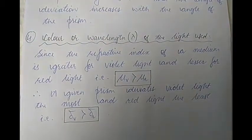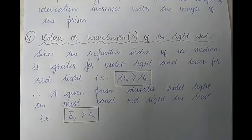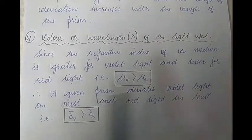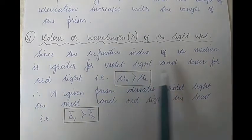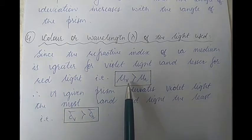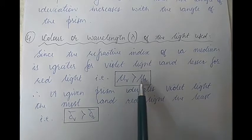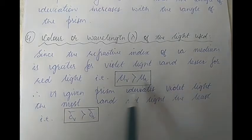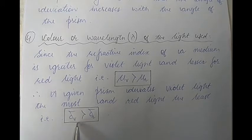The fourth factor is the color or the wavelength of light. We have already learnt that the refractive index of a medium is different for different colors of light. Furthermore, the refractive index of a medium is greater for violet light and less for red light — that is, refractive index for violet light is greater than refractive index for red light. Therefore, for a given prism, violet light deviates the most and red light deviates the least. That is, the angle of deviation of violet light is greater than the angle of deviation for red light.